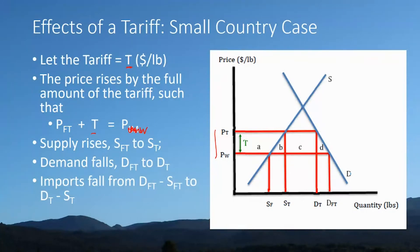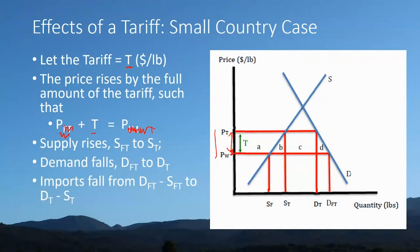Follow the terminology on the graph. PW is the world price, also called the free trade price. PW plus T equals P sub T. The tariff rate is given by the vertical distance shown by the green arrow. Starting from the world price PW, putting a tariff in place raises the domestic price by the full amount of the tariff up to P sub T. Because of the small country effect, it doesn't affect the world price at all.